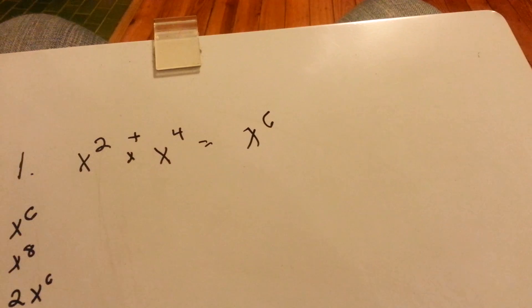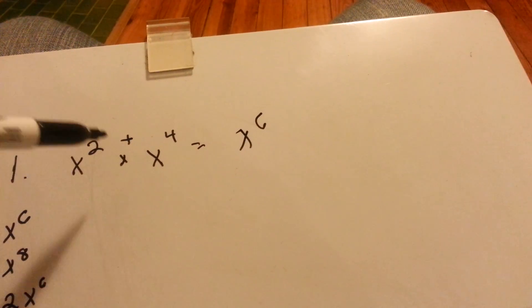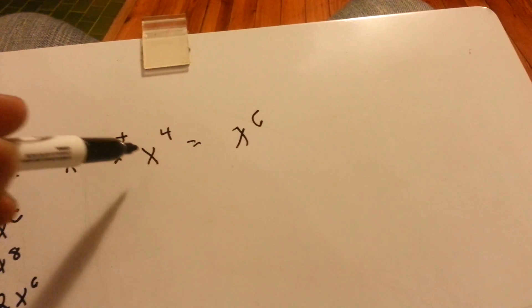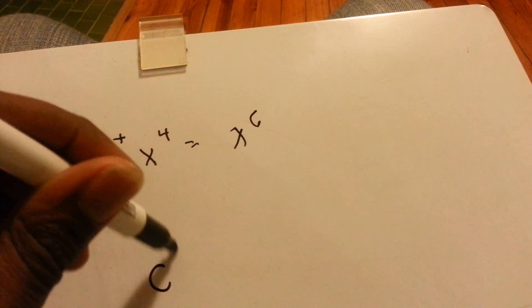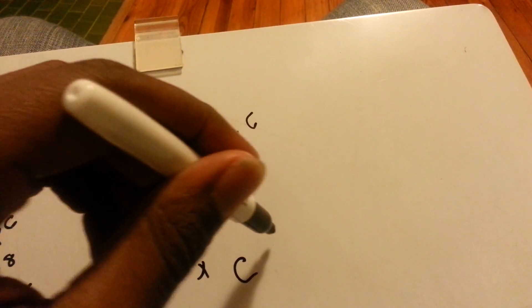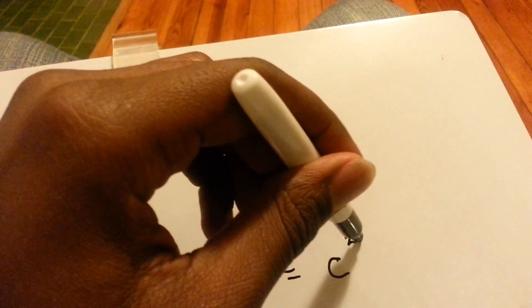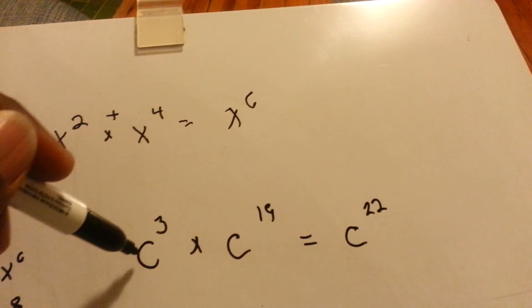The simplest thing is just to know that when you are multiplying factors with exponents, like c cubed times c to the 19th, that would equal c to the 22nd. You just add them because it is the same base.